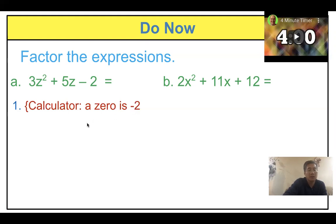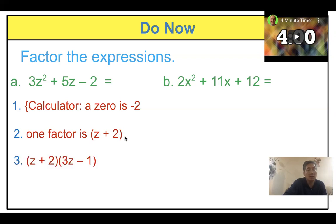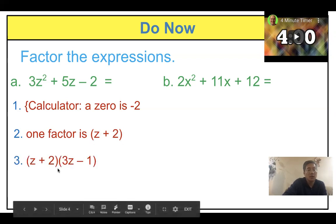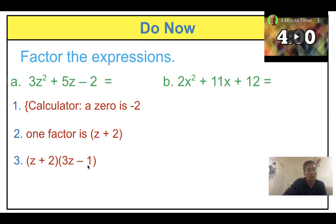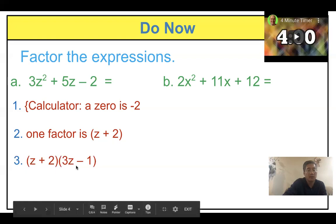If zero is negative two, what is the factor? It's z plus two — not x, it's z. Then to get the other factor, you put the parentheses here. z times what gives three z squared? Yes, three z. And two times negative one gives you negative two. So this is your factor. You don't need to worry about the five z — if you FOIL it, you will see that you get the five z.